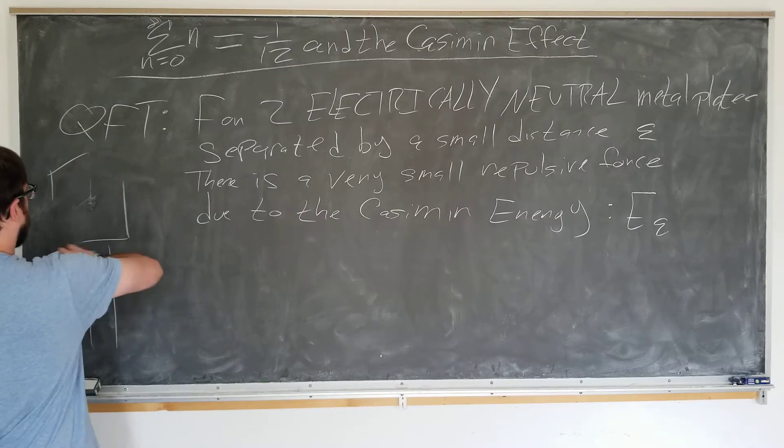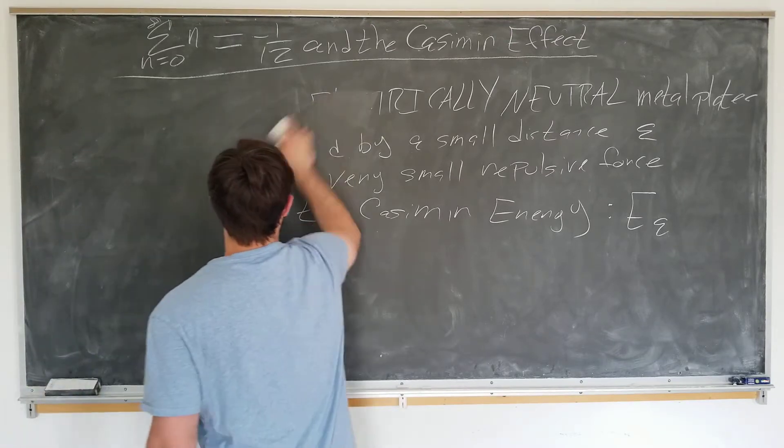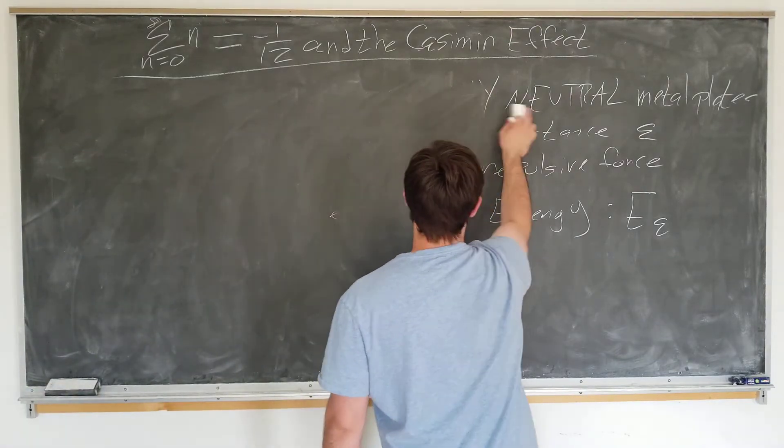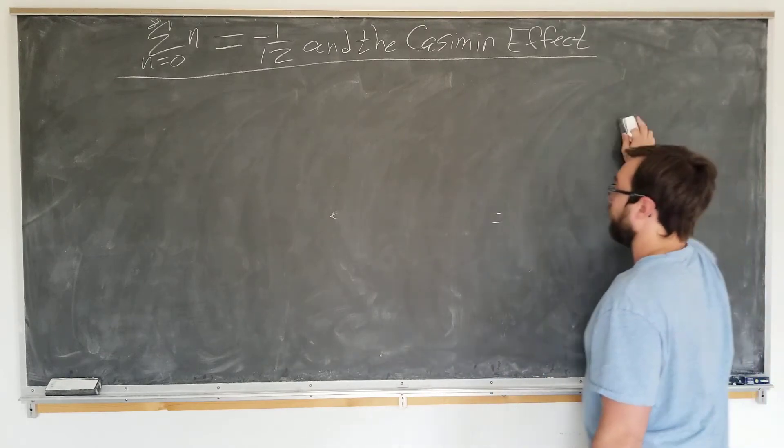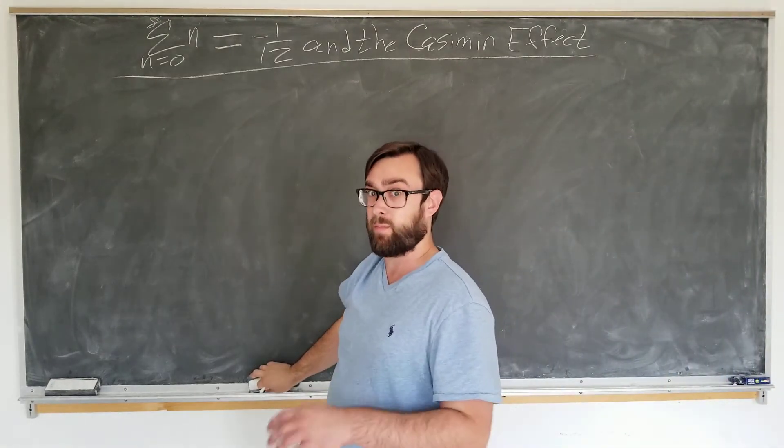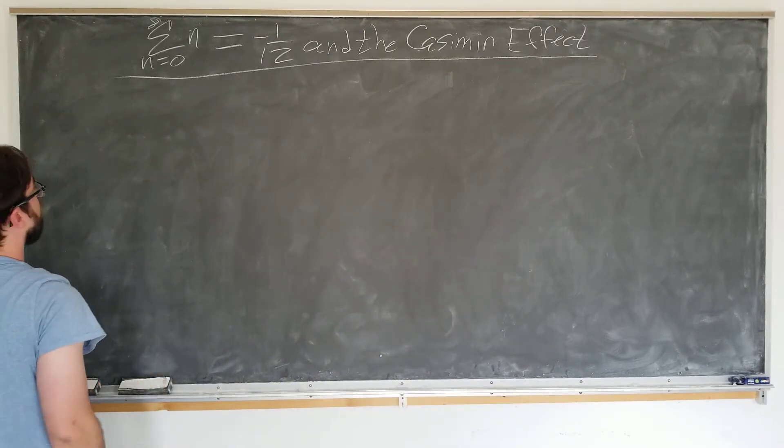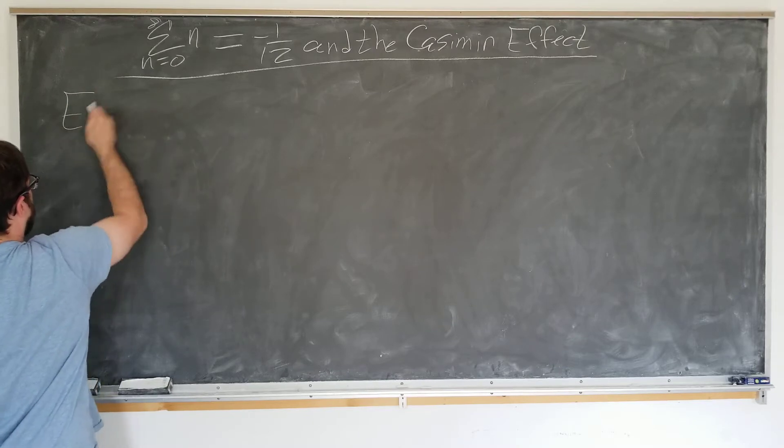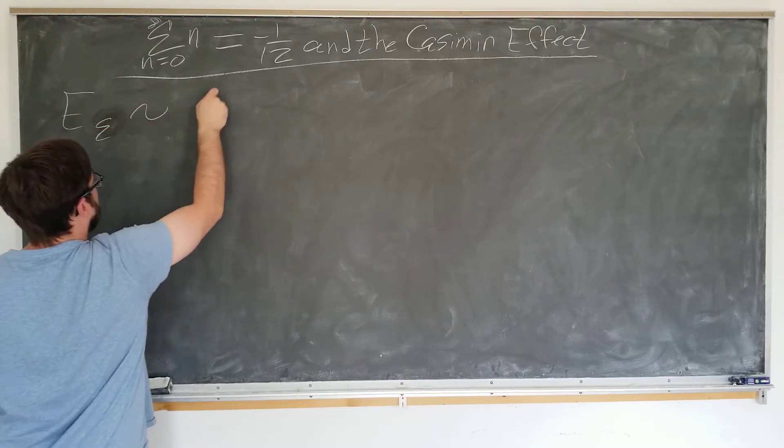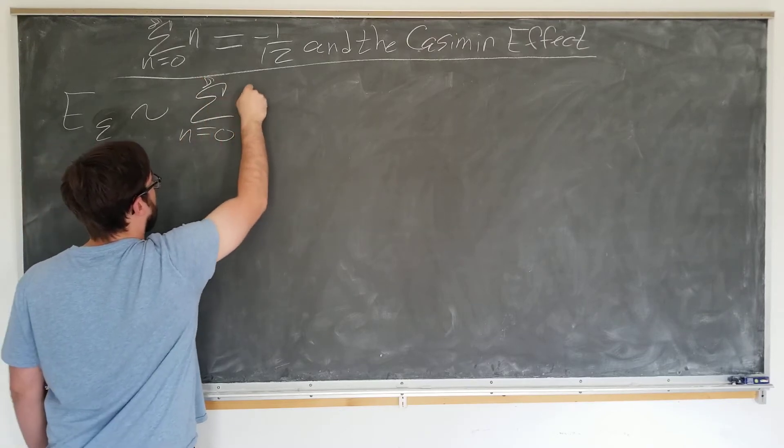Quantum field theory also tells us how to calculate this. It tells us that it's actually going to be equal to the sum of all the integers, or it's going to be proportional to this obviously, since it has to have units of energy. It tells us that this E_epsilon is approximately the sum of the integers.